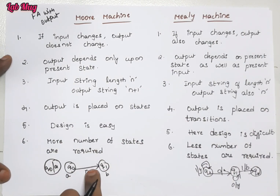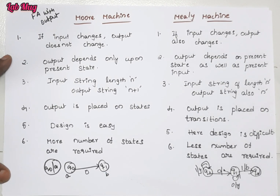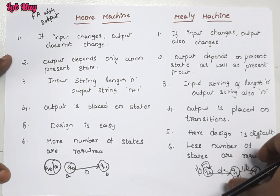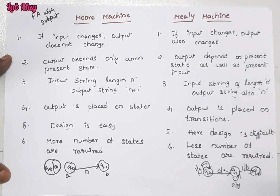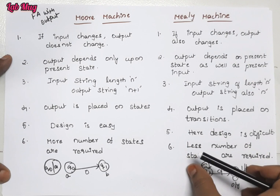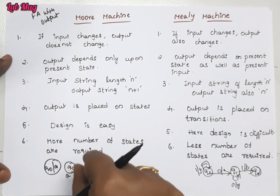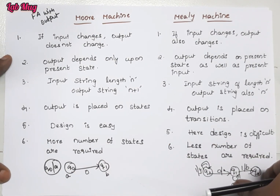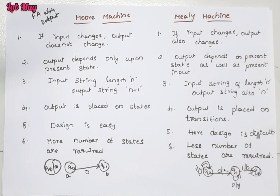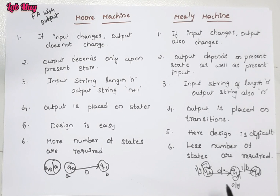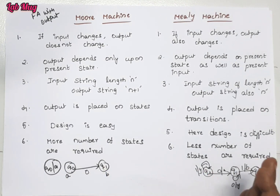In Moore machine design, even with any number of states, the output is common, so it is easy to design. But in Mealy machine, since each and every input symbol has its own output, it is a bit difficult to mention. Also, in Moore machine, more states may be required, while in Mealy machine, comparatively fewer states are needed. The state table for Mealy machine is somewhat more difficult to form compared to Moore machine.